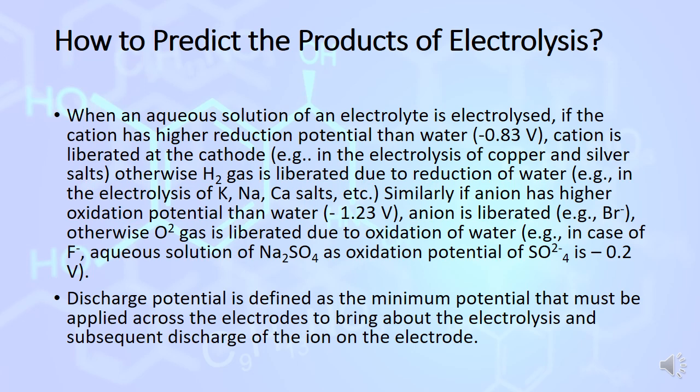Discharge potential is the minimum potential that must be applied across the electrode to bring about the electrolysis and subsequent discharge of ions on the electrode.